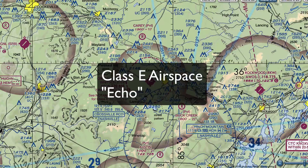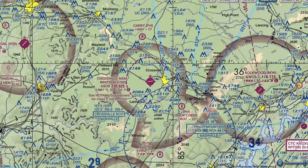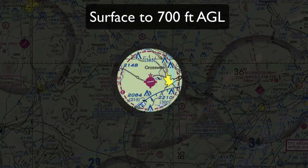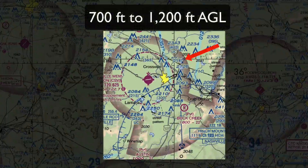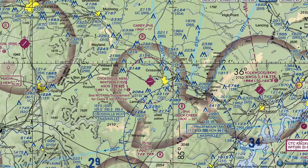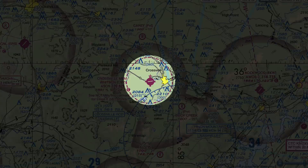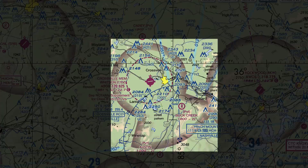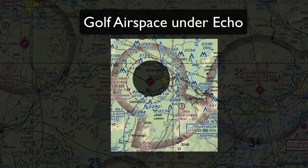Let's take a look at Class E, echo airspace. This airspace can be slightly confusing and many people miss questions on the remote pilot test because of it. Class Echo airspace is controlled airspace and requires ATC authorization for operations within it. This airspace is indicated from the surface up to 700 feet above ground level with a dashed magenta line. The magenta vignette — the faded circle — indicates Class Echo airspace from 700 feet to 1,200 feet. Here at the Crossville Airport, Class Echo runs from the surface up to 700 feet, and then from 700 to 1,200 feet in the surrounding area.